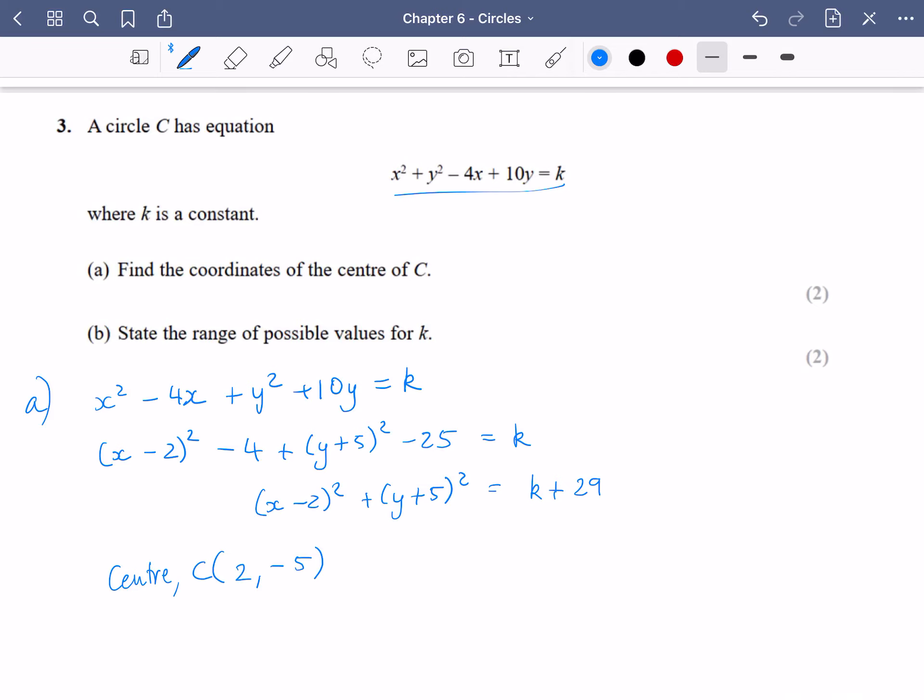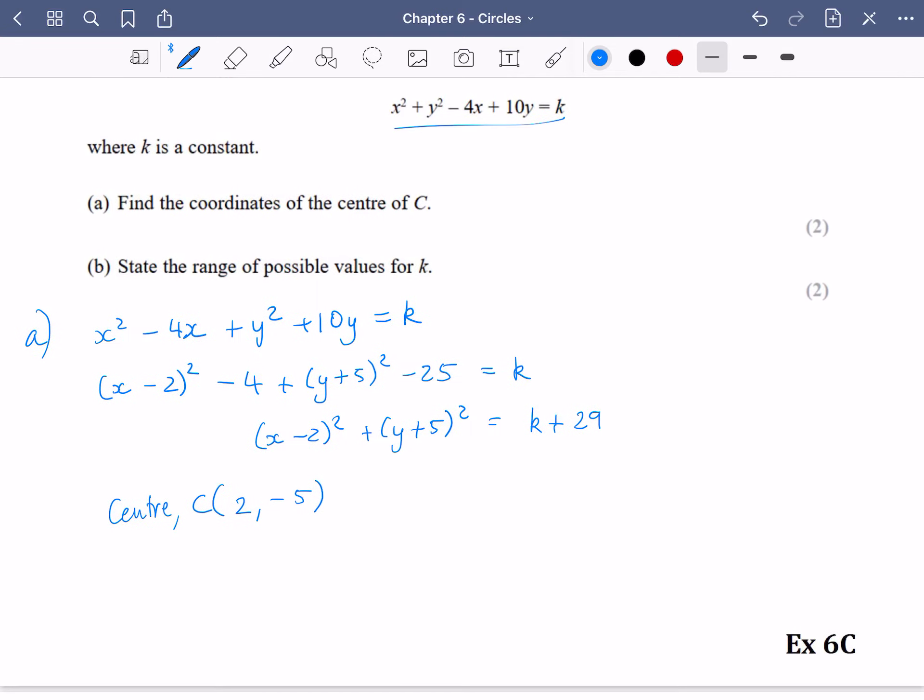Now part b of the question is, state the range of possible values for k. So I guess I'm going to look at this section that I've got here. And I want to think, what on earth are the restrictions on this? So think about the circle equation, the standard circle equation. Let's just keep it really simple. x² + y² = r². What do we know about this right hand side here?